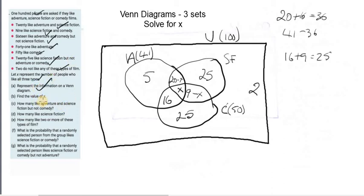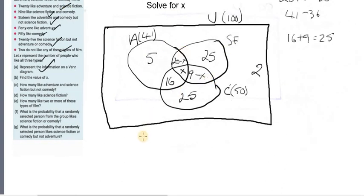Now to find the value for x, what I need to do is I need to add up all the information here, and I know it's going to be equal to 100, because that's the universe. All these elements in this set, they all add up to 100. So I'm going to add up 5. I'm going to work across this way. Let me just move this down for a second. Okay, so I need to add all these up. So let me add up 5 plus 20 minus x plus 25.